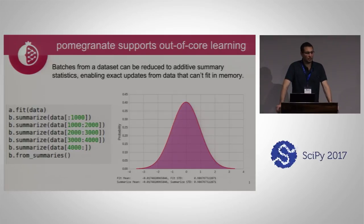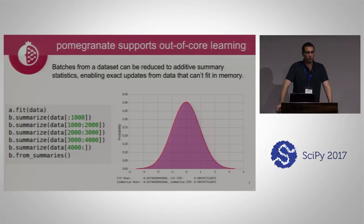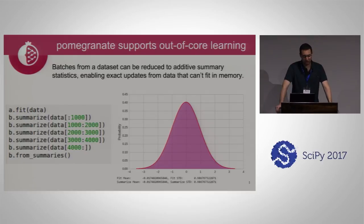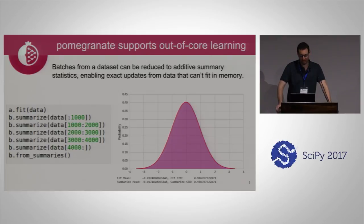A natural extension of these additive updates is that Pomegranate supports out-of-core learning. There's no reason to store all data in memory if you're simply adding together sufficient statistics. You load up one batch, calculate and store the sufficient statistics, load the next batch, calculate and add to the previous ones, and so forth. The result is basically identical to fitting directly on all the data — the two are identical to machine precision.